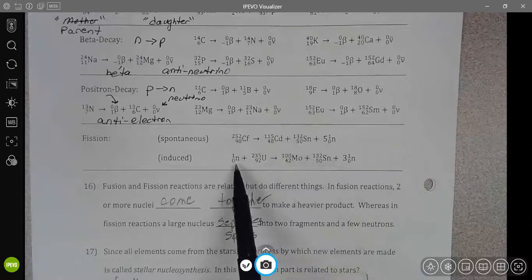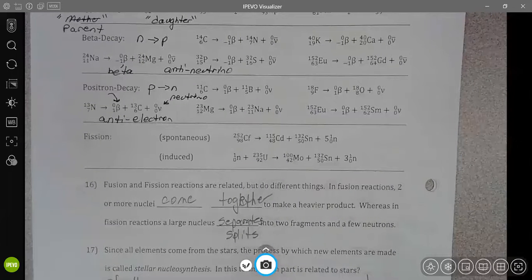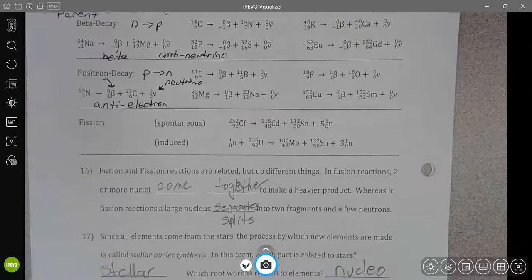This reaction here with uranium 235 is the one in nuclear power plants. And there is one more type of decay to talk about, which I won't mention in this video. I'll tell you guys about that in class next week.